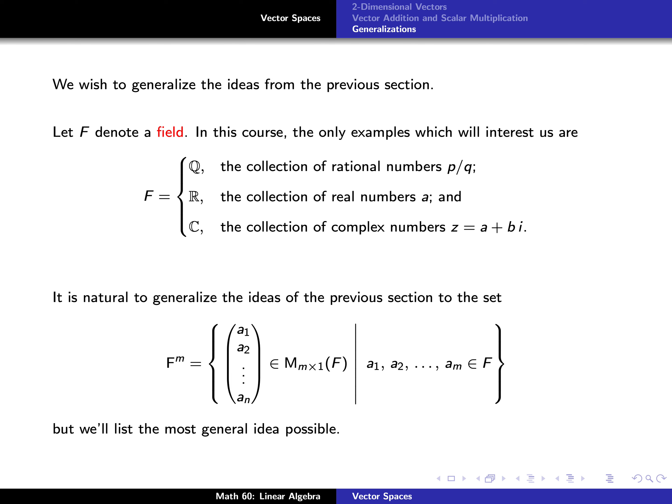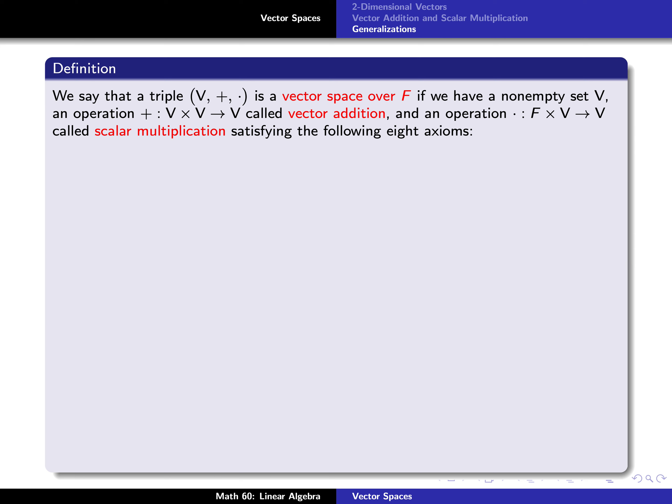What you might think we want to do is generalize from pairs (a1, a2) to m-tuples (a1, a2, …, a_m). But we're going to do something slightly more general than even this. Remember that before we talked about properties of vector addition and scalar multiplication when we wrote down those eight properties. Now we're going to make a definition based on eight properties that we want to be true. Properties that we want to be true we're going to call axioms. We'll say that a triple is a vector space if the following eight axioms hold.